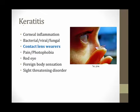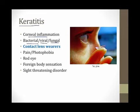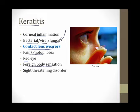The sclera is separated from the environment by a transparent layer called the conjunctiva, but the cornea has no conjunctiva layer covering it. It is exposed to the environment and can potentially become inflamed or infected — this is called keratitis. Keratitis is corneal inflammation often caused by bacteria, viruses, or fungi. Contact lens wearers are particularly at risk because the lens can introduce infectious agents. Patients present with pain, photophobia, a red eye, and a foreign body sensation. Keratitis is a sight-threatening disorder because the cornea allows light to enter and hit the retina, so corneal damage can cause vision loss.